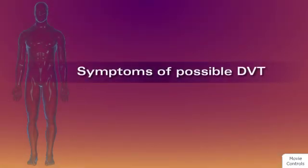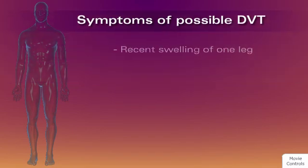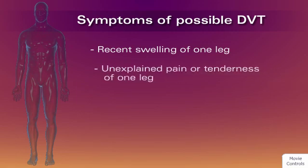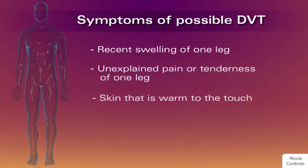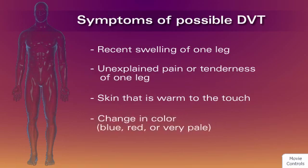Symptoms of DVT and PE can develop slowly or suddenly. If you have any of these symptoms, contact your doctor immediately: recent swelling of one leg, unexplained pain or tenderness of one leg, skin that is warm to the touch, or a change in color — blue, red, or very pale.